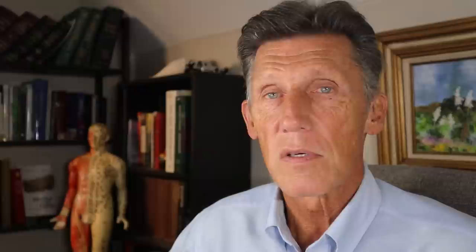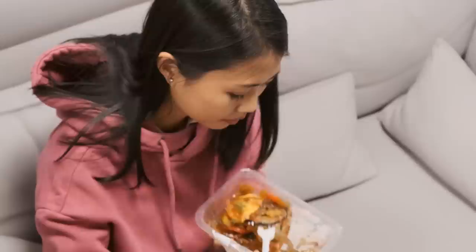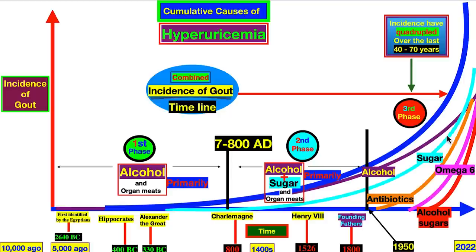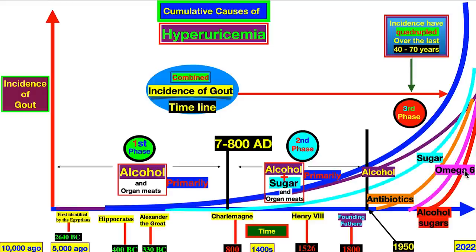Sugar kept increasing, but the alcohol sugars zoomed up, as did omega-6 seed oils. High-fructose corn syrup made fructose cheaper. Omega-6 increased as a replacement when polyunsaturated fatty acids from vegetable oils — not olive oil or palm oil, but seed oils — became dominant. So in the last 70 years, rates have just skyrocketed. The one thing I'm not talking about right here are the nutrient deficiencies that also happened in the last 70 years — we'll cover those next time.